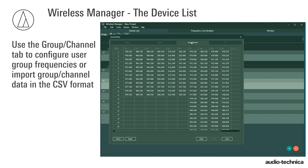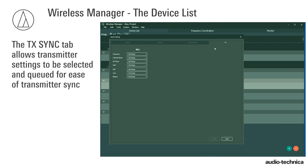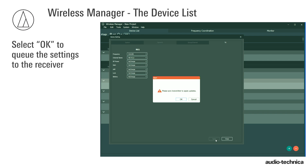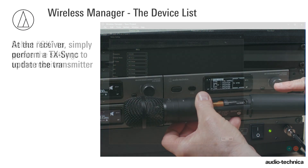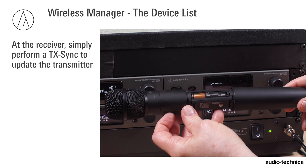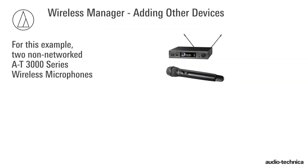Use the Group Channel tab to configure user group frequencies or import group channel data in the CSV format. The Transmitter tab allows transmitter settings to be selected and queued for ease of transmitter sync. Choose the items, select the desired values, and click Apply. Select OK to queue the settings to the receiver. At the receiver, simply perform a TX-Sync to update the transmitter.